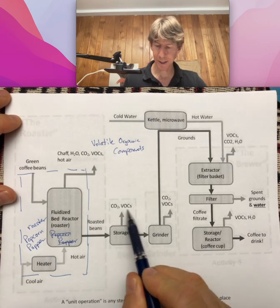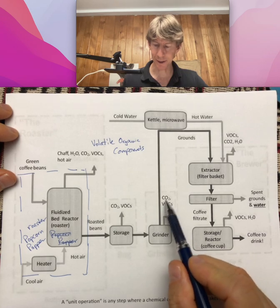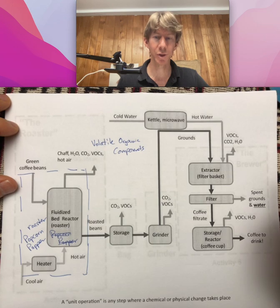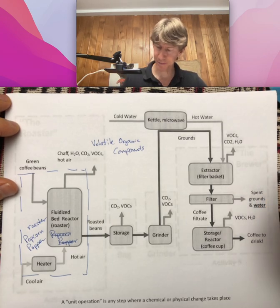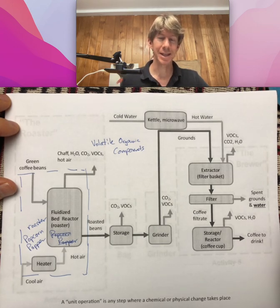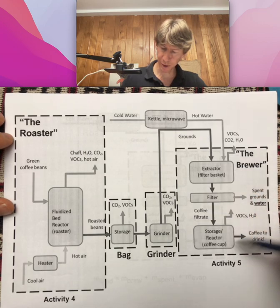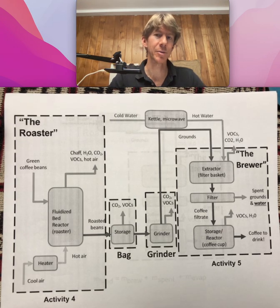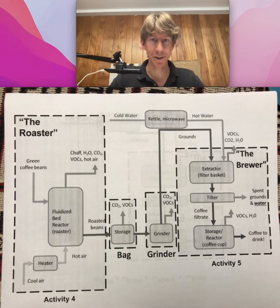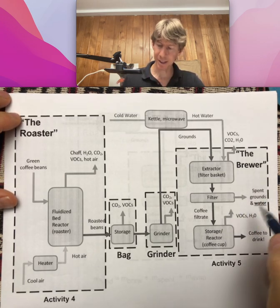In storage, volatile organic compounds and carbon dioxide continue to come out. In the grinder, grinding releases some of the same materials. And while brewing, chemicals including VOCs, CO2, and H2O are also released — even once the coffee is made. That's a more detailed version. The brewer part is where we're going to do our mass balance today.